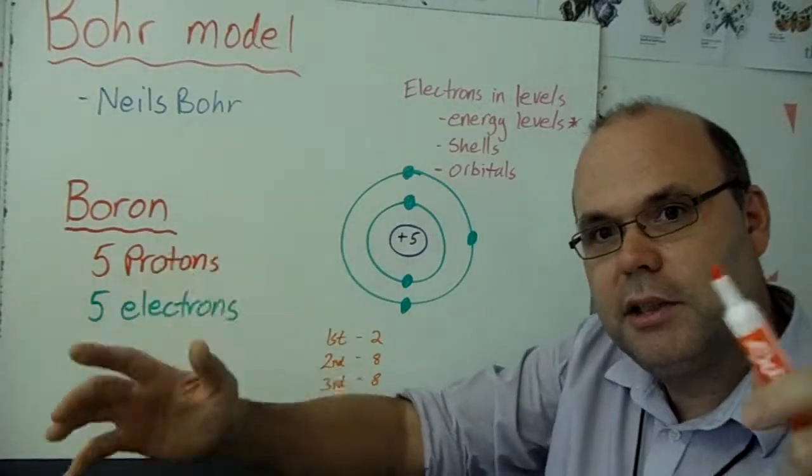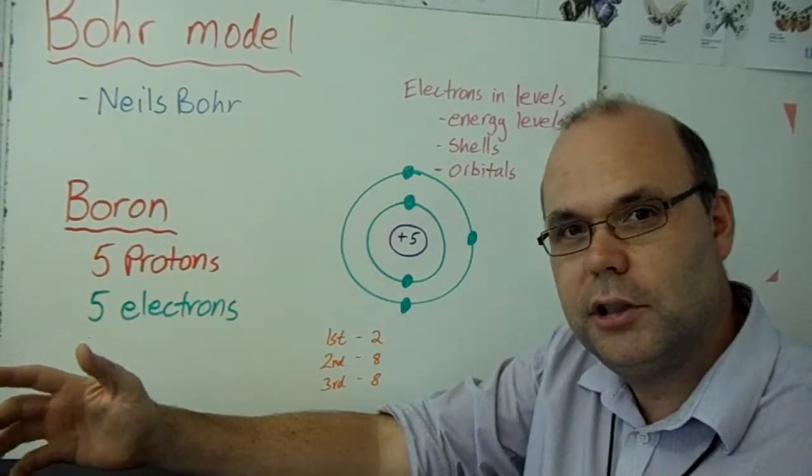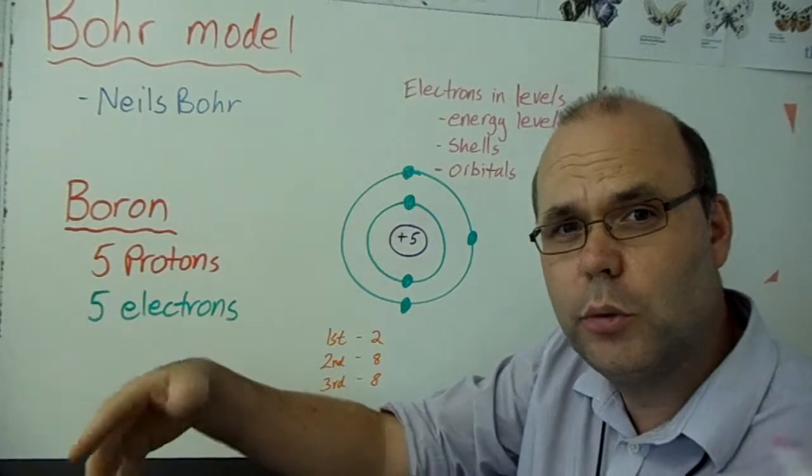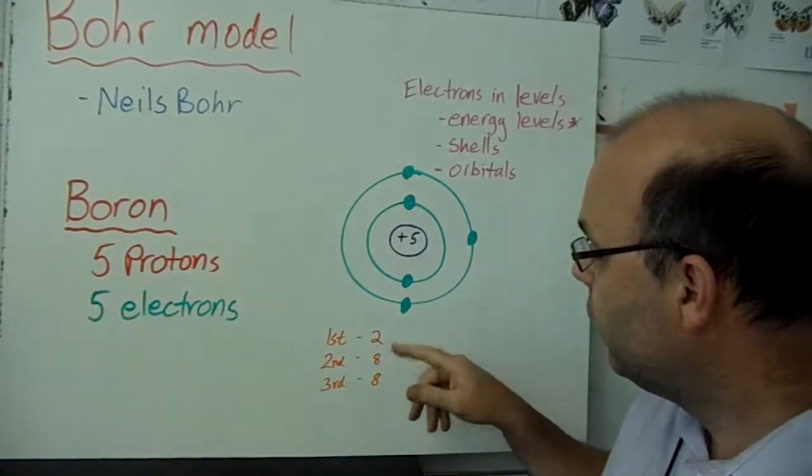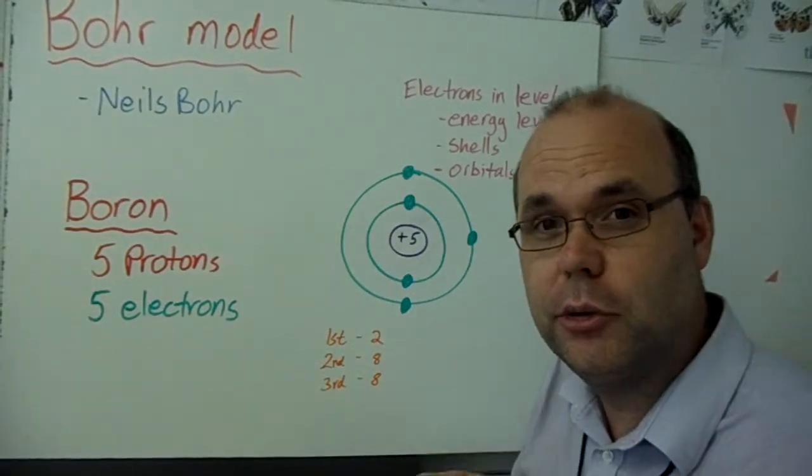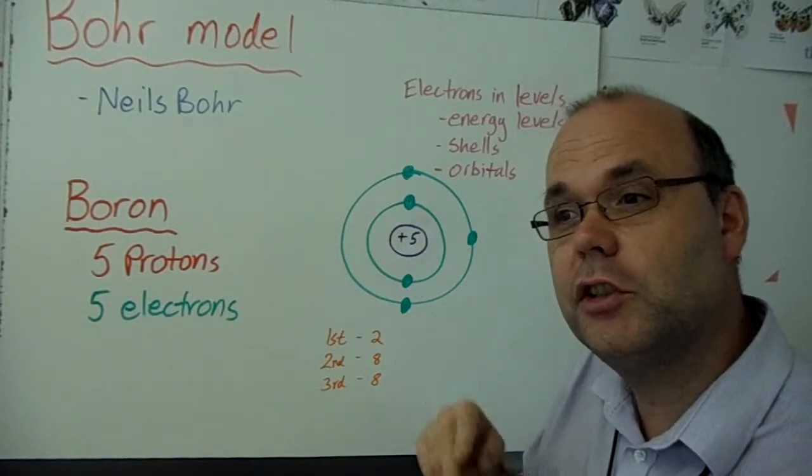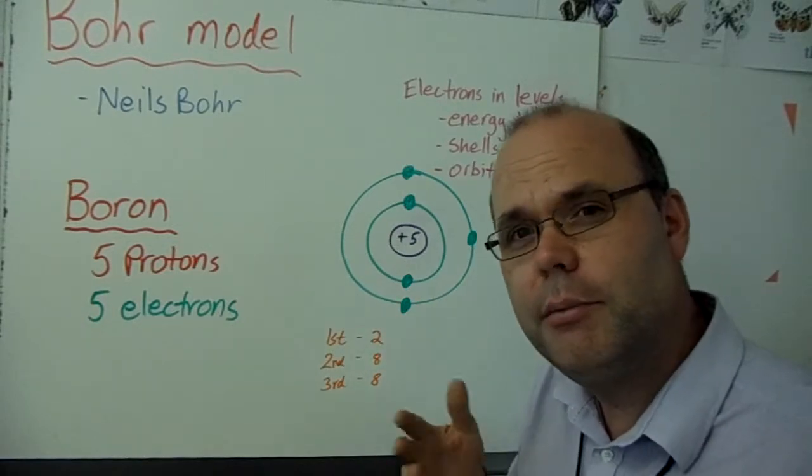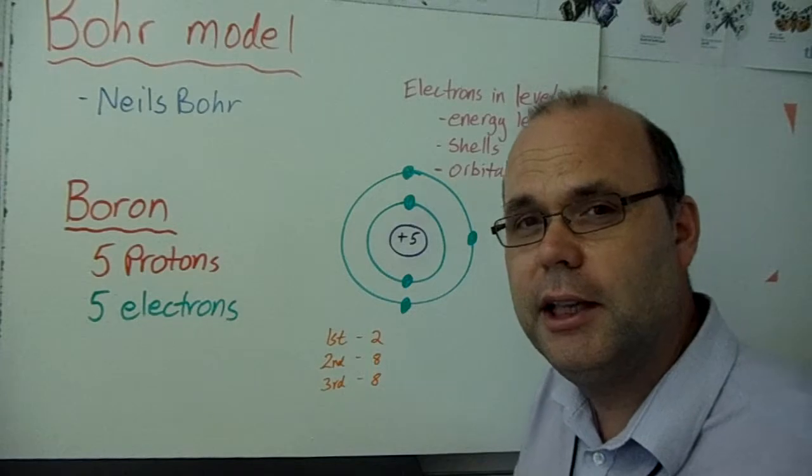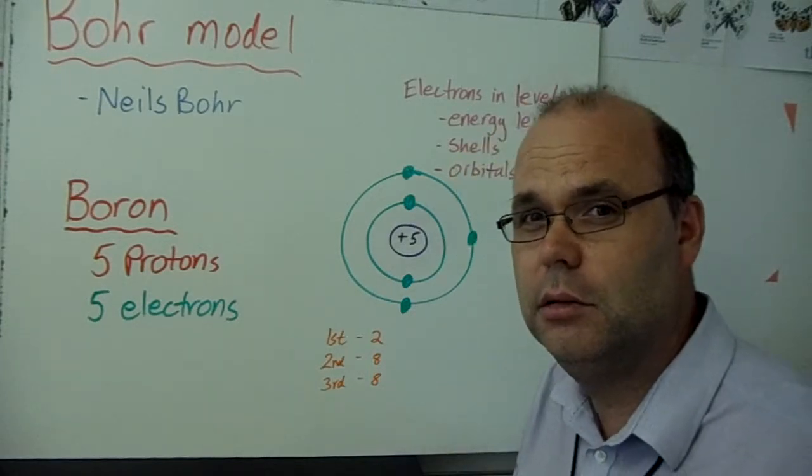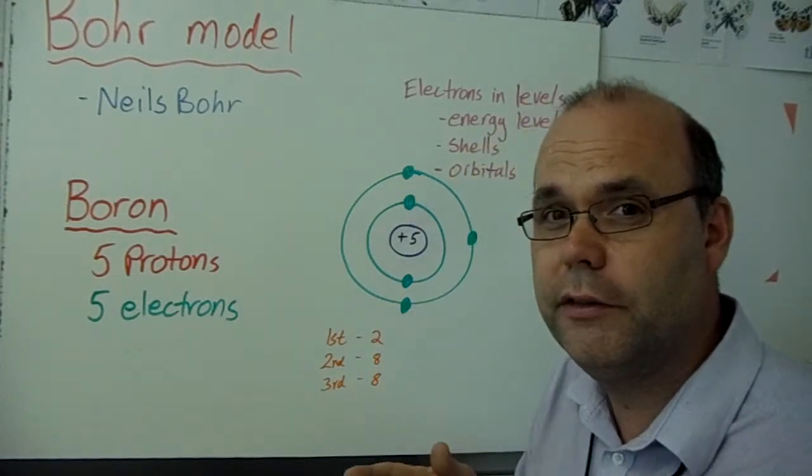Now, they keep building these energy levels. You can have seven in total. We're only going to worry about the first three. The first one can only fit two electrons in it. Remember, that's the lowest energy level. They're the most relaxed there. The electrons like to be there. But only two can fit.